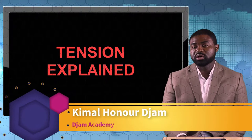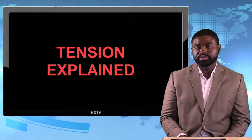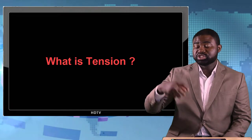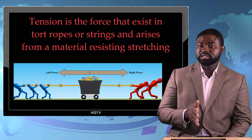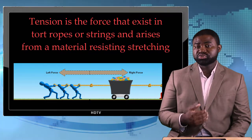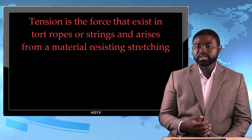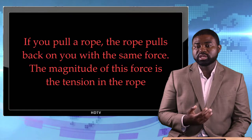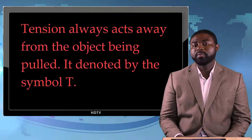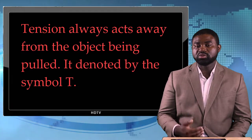The next force we are going to talk about is tension. The tension force exists in taut strings and ropes. If you pull a string and it's taut, then the string is under tension. Tension really arises because the string itself resists being pulled or stretched. The size of the stretching force on the string is what we call tension. The most important thing to note about tension is that it always acts along the string in both directions.